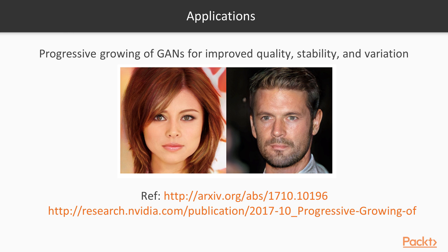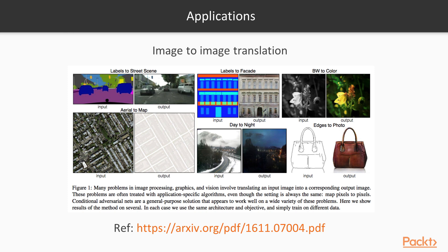You can also do image-to-image translation. So you give an input and you get an output. For example, if you want to label a street scene, you basically sketch what you want — you can sketch a street in purple, sketch cars, and so on — then push that through a generative adversarial network and it generates something that looks realistic. You can also go from edges to a photo, from day to night, gray to color, label to facade, and so on.